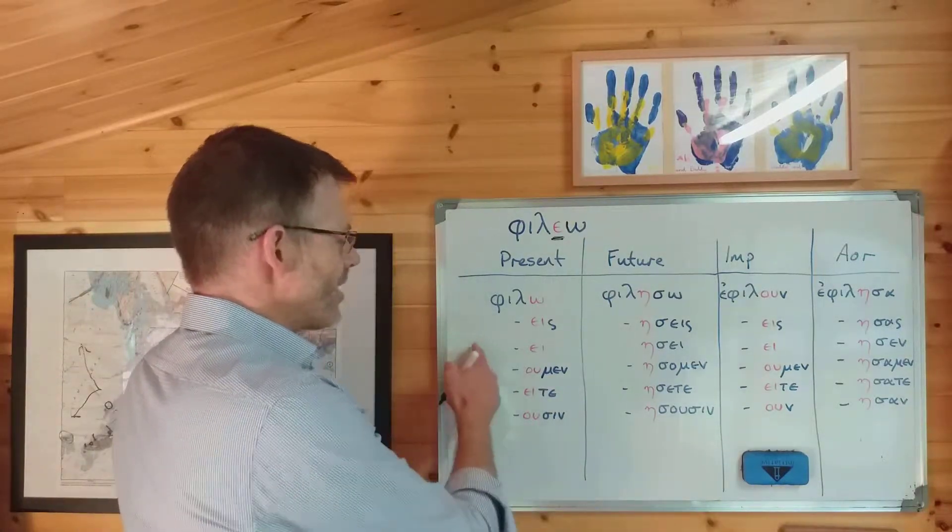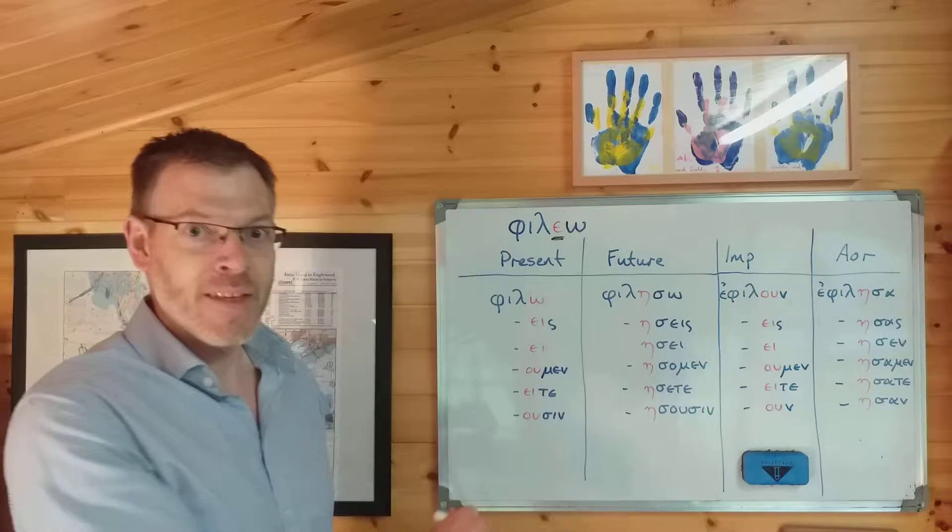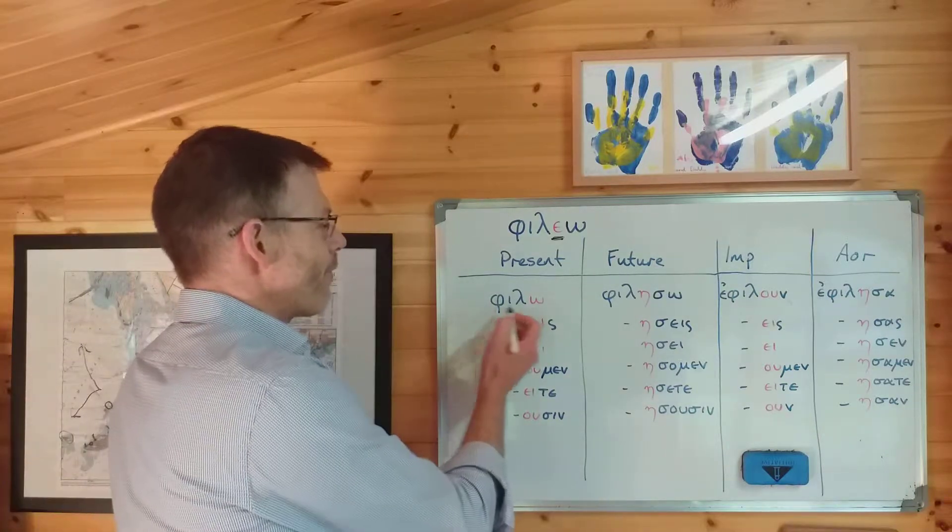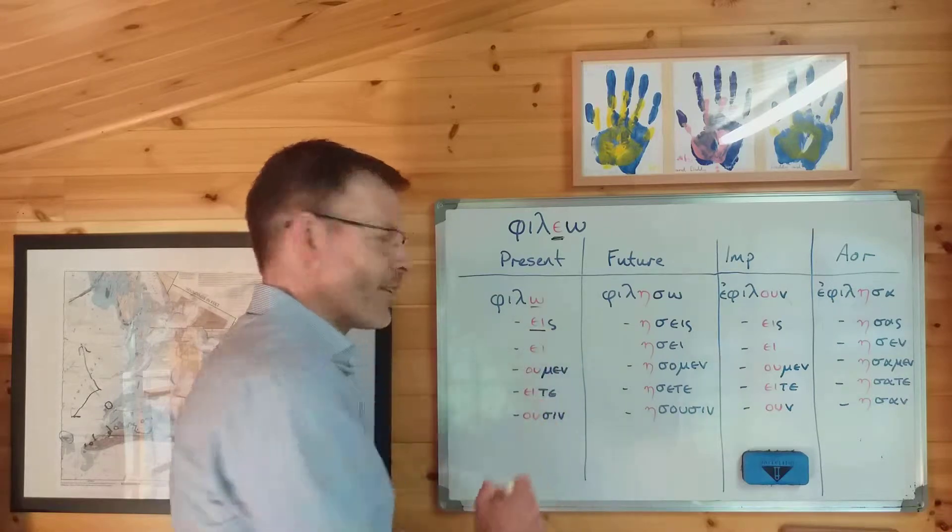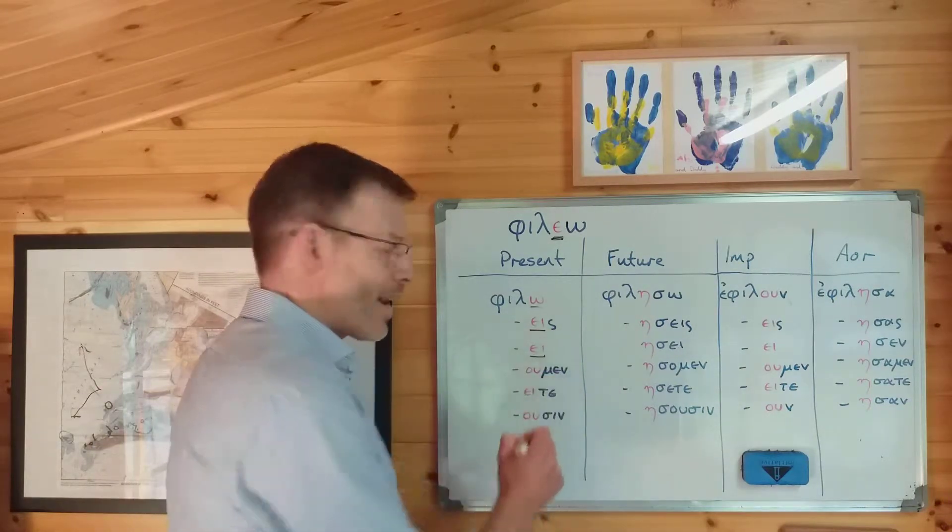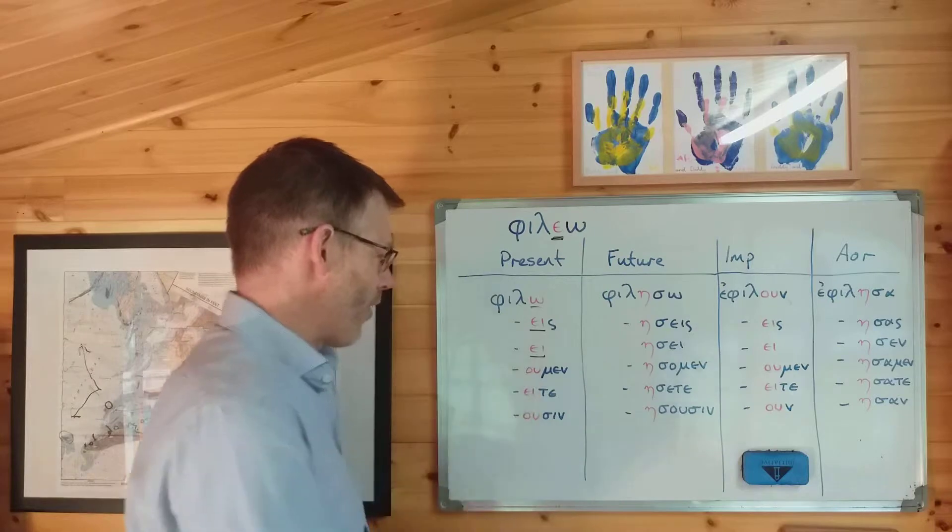So, λύω, λύεις, λύει, λύομεν, λύετε, λύουσιν, is what you'd normally have. Well, φιλῶ, no change needed, long vowel. φιλεῖς, no change needed, diphthong. φιλεῖ, no change needed, diphthong.